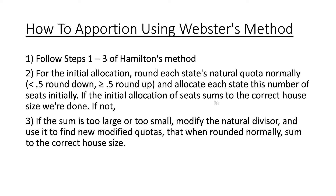If the initial allocation of seats sums to the correct house size, we're done. If not, part three: if the sum is too large or too small, modify the natural divisor and use it to find new modified quotas that, when rounded normally, sum to the correct house size. Remember, we're rounding normally. All of the other methods only rounded down, so this is the first one that's different.